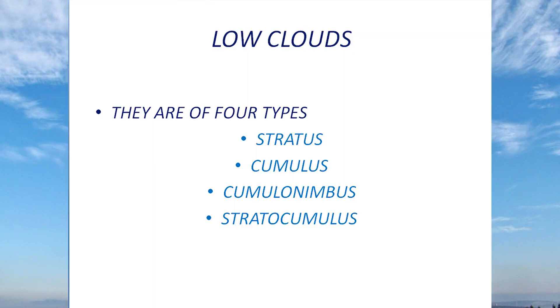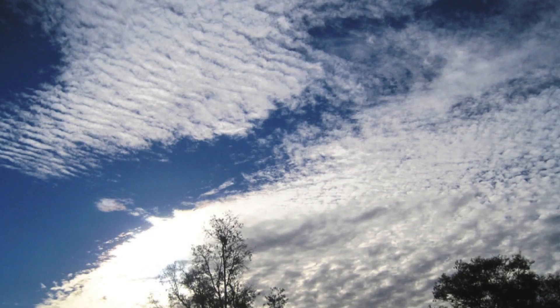The third variety is low level clouds, which appear at a height less than 1,980 meters. They are of four varieties: stratus — layered clouds; cumulus — piling clouds; cumulonimbus — nimbus means rain; and stratocumulus.